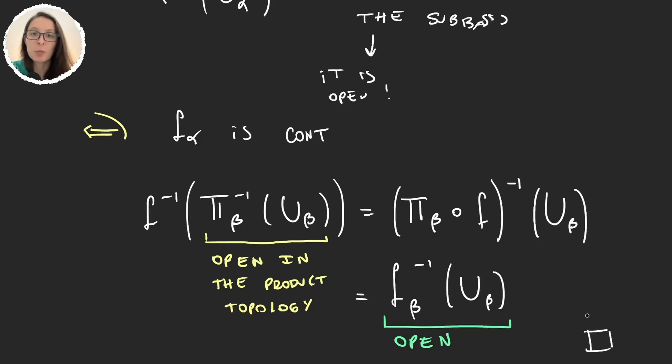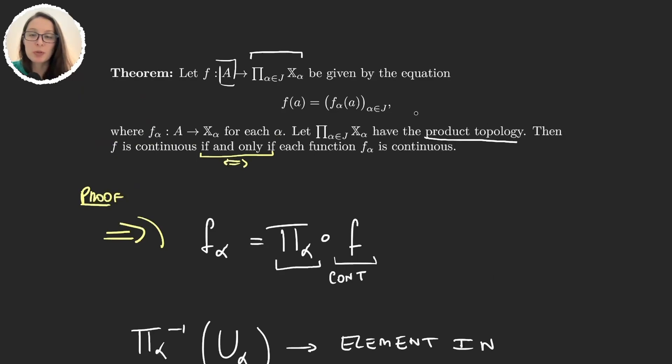Now let's see why is it that this theorem is not saying the box topology instead of product. And we will see that this fails in a particular case.